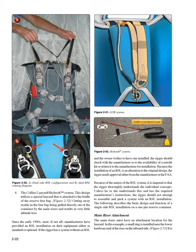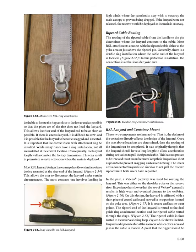Because of the nature of the RSL system, it is imperative that the rigger thoroughly understands the individual concepts. Unless the rigger understands this and has the required manufacturer's instructions, he or she should not attempt to assemble and pack a system with an RSL installation. The following describes the basic design and function of a single-side RSL installation on a one-pin reserve container. The main risers must have an attachment location for the lanyard. A small ring is installed near the lower hardware end of the riser on the inboard side. It is desirable to locate the ring as close to the lower end as possible so that the pivot arc of the riser does not load the lanyard. If there is excess lanyard, it is difficult to stow and the lanyard may become snagged. It is important that the correct risers with attachment ring be installed—not all rings are installed at the correct location, and an incorrect lanyard length can result in premature reserve activation when the main is deployed.